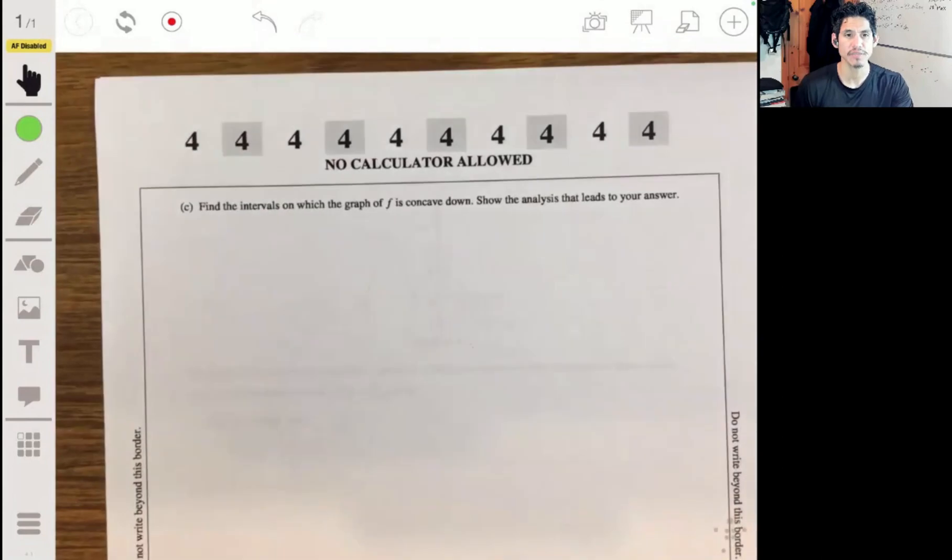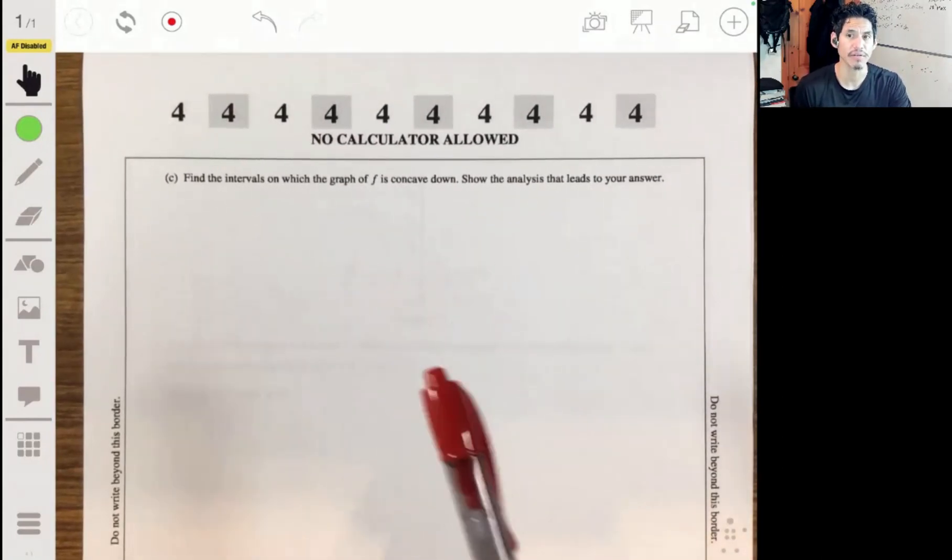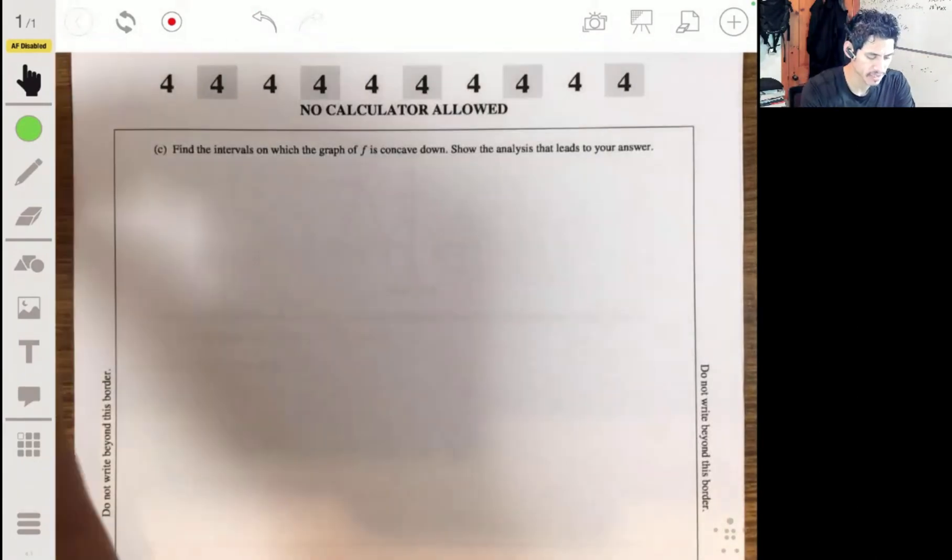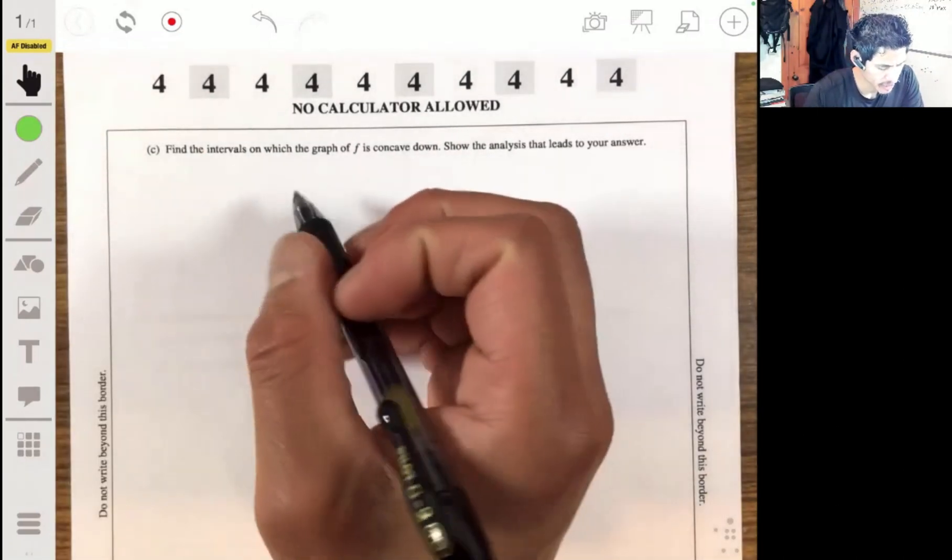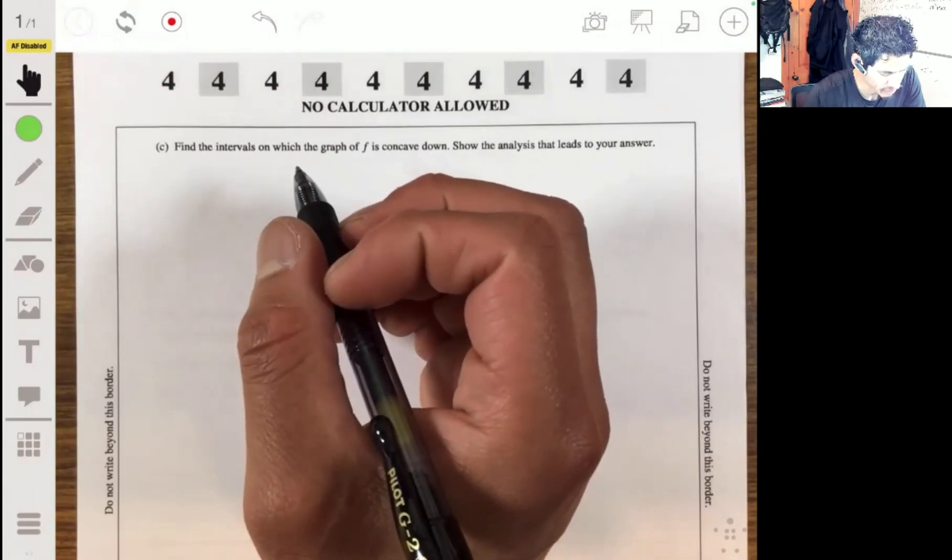And last part, find the intervals on which the graph of f is concave down. So all we have to do now is look at the second derivative and see what the sign is there by focusing first on inflection points. So we take the derivative of the derivative, let's take the derivative of f prime of x.